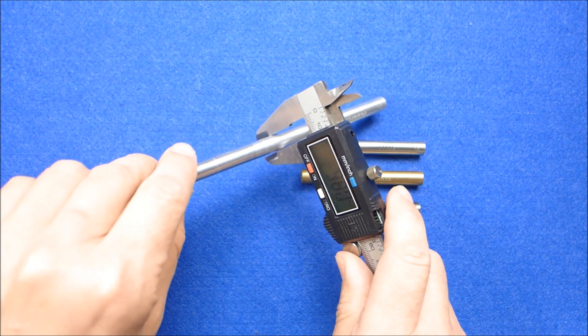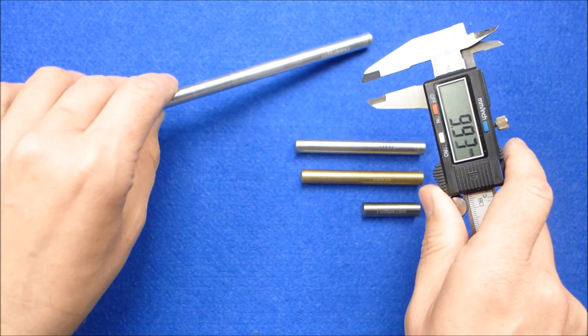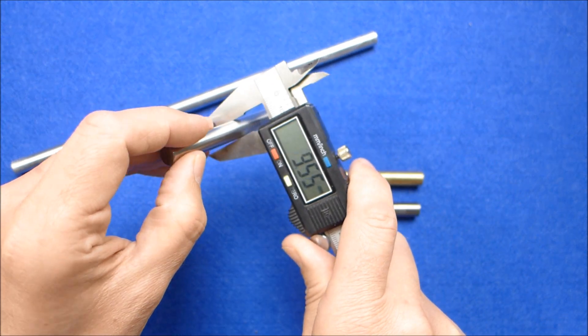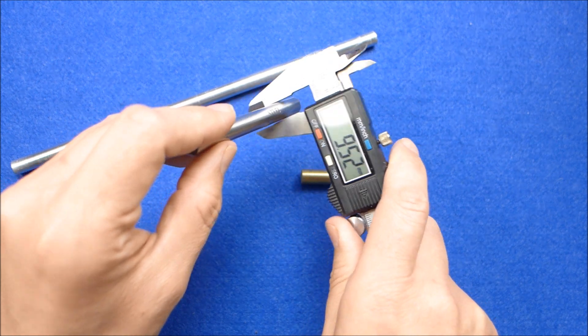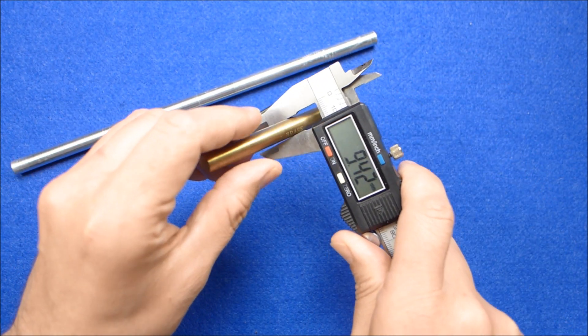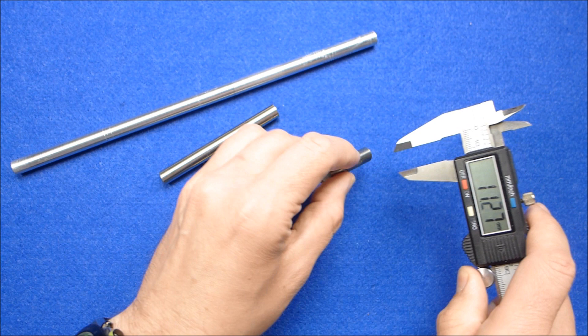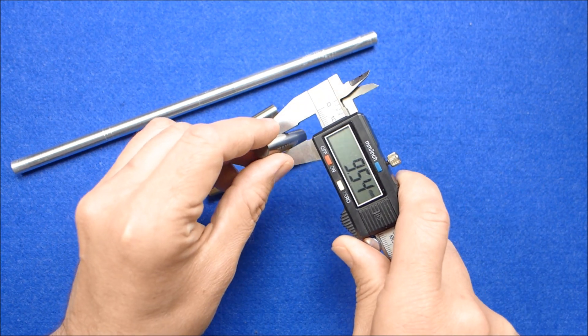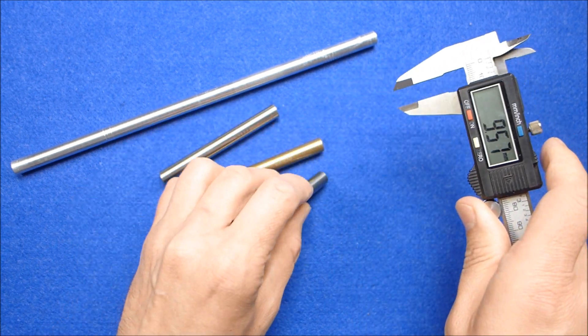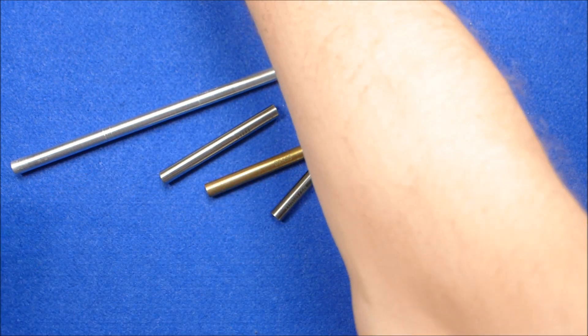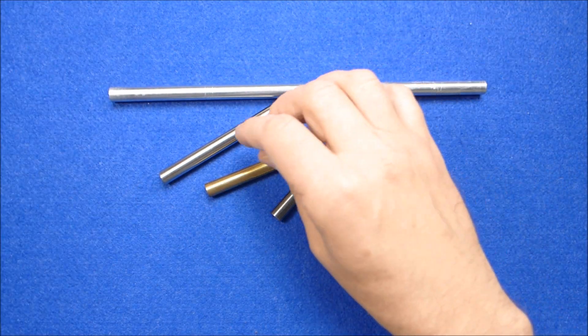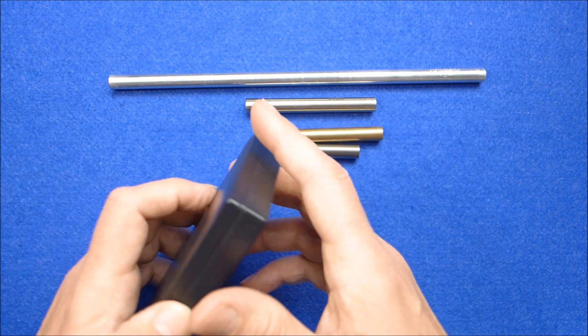They're all roughly about 9.5 mil. I think the brass one is just slightly smaller at 9.5 mil, steel is 9.42 mil, and the tungsten is 9.43 mil. Like I say, it's probably roughly 9.5 mil, but they are the same diameter.